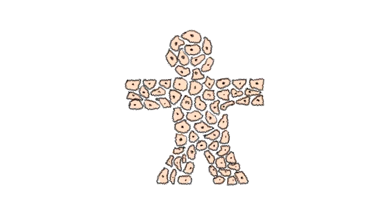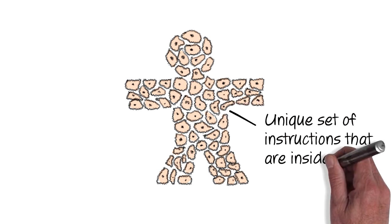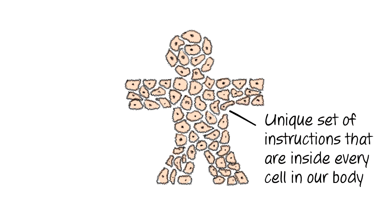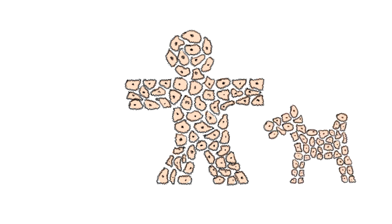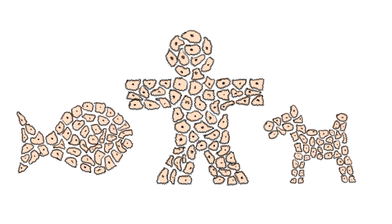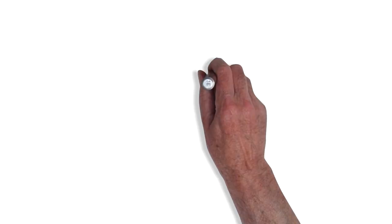When we're born, each of us grows according to a unique set of instructions that are inside every cell in our body. All living things are made of cells. They're like small packets of life.